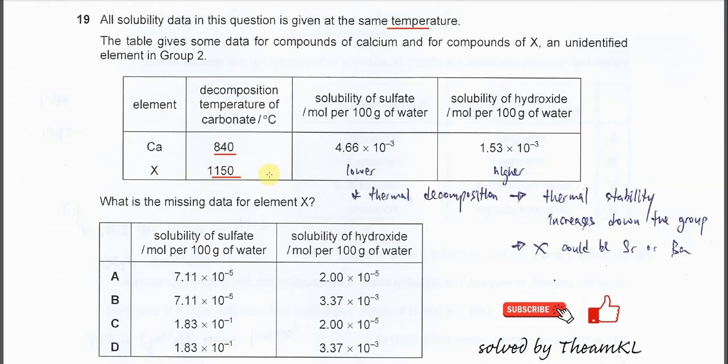We know that the thermal stability down Group 2 is higher. Thermal stability increases down the group, meaning it's harder to decompose the Group 2 carbonate when going down Group 2.